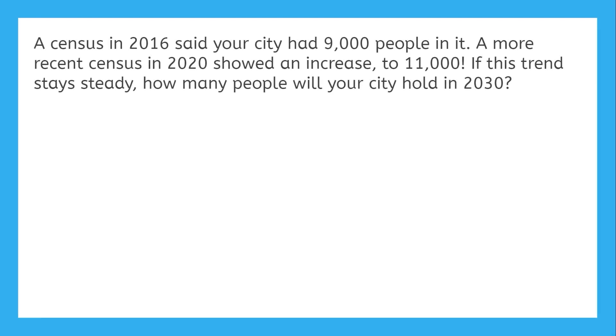The key to solving this problem was recognizing that it would be easier to write an equation in point-slope form than in slope-intercept form. In a lot of scenarios, both in math textbooks and in the real world, the only data you'll have is a couple of random points. But even that is enough information to solve problems and make predictions. Take this scenario: in 2016, your city had 9,000 people, and in 2020, there were 11,000. We can use this information to predict the amount of people in the year 2030. Since all we have is two points and neither resembles a y-intercept, we'll use point-slope form.